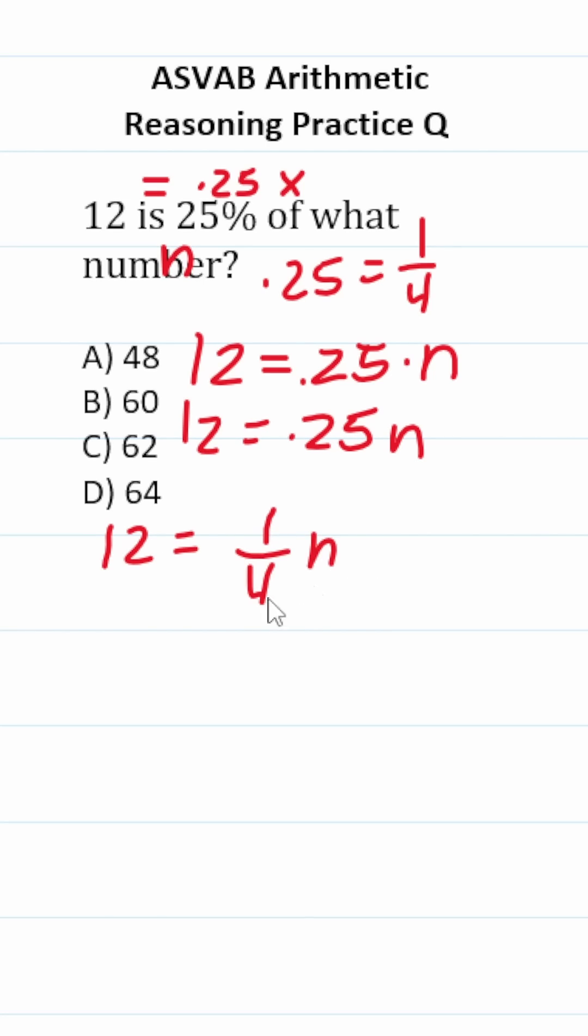Let's solve for n now. To get rid of this one fourth in front of n, we're going to multiply both sides by the reciprocal of one fourth, which is four over one. This crosses out, leaving us with just n on this side.